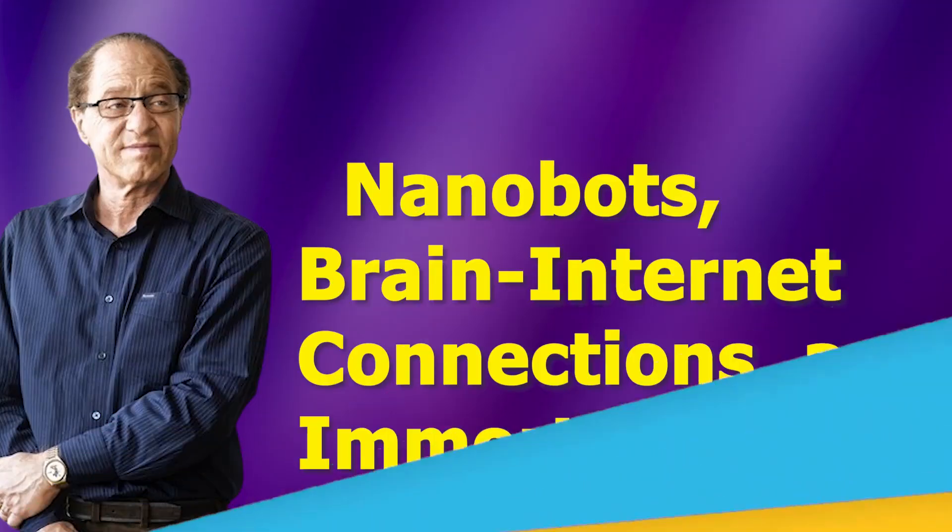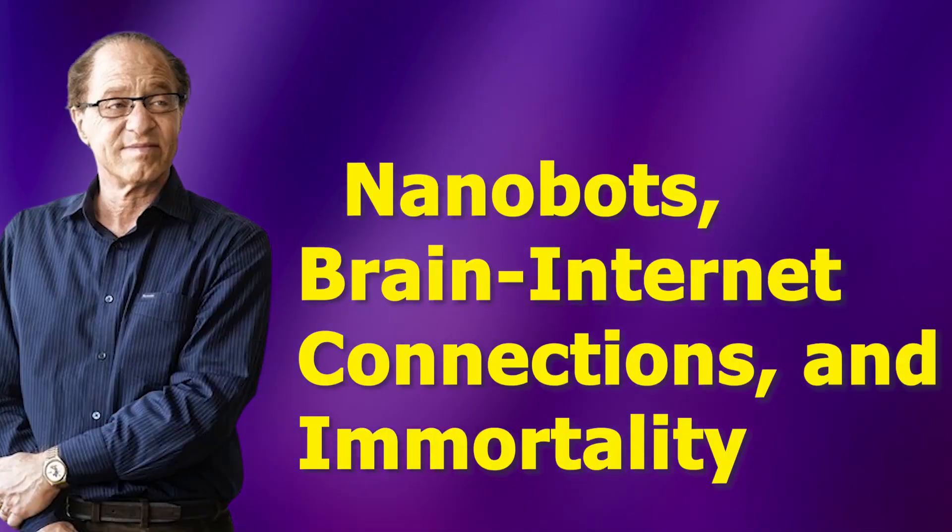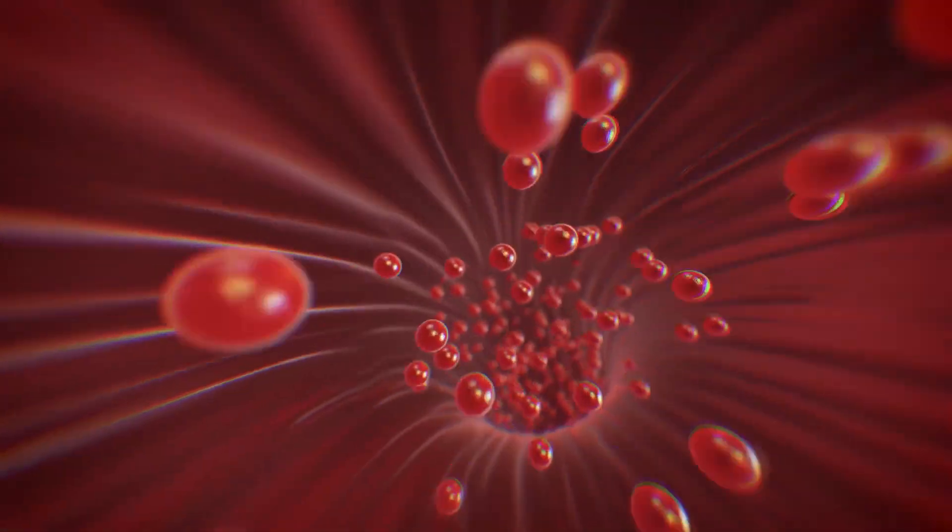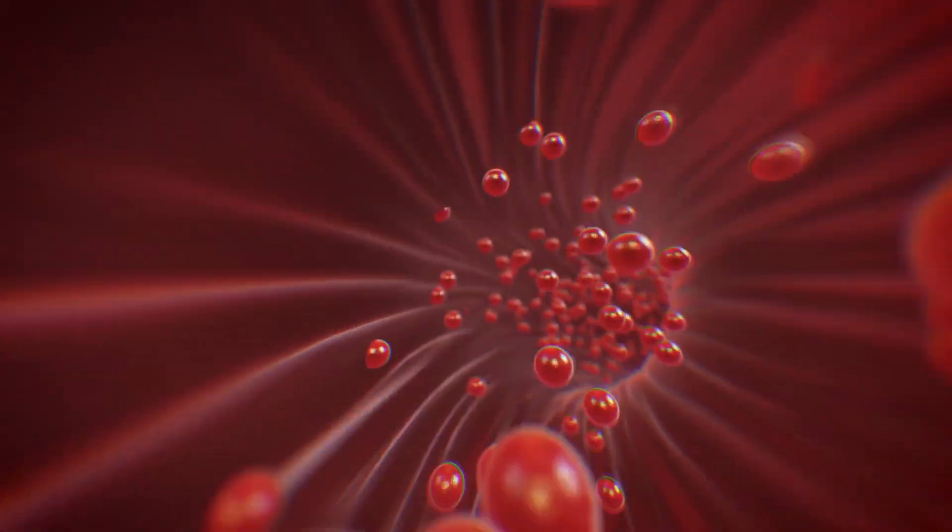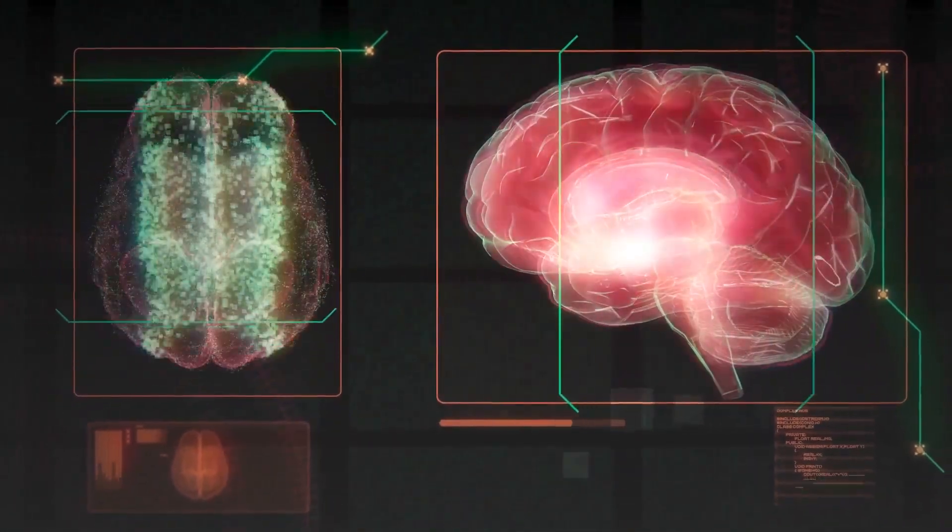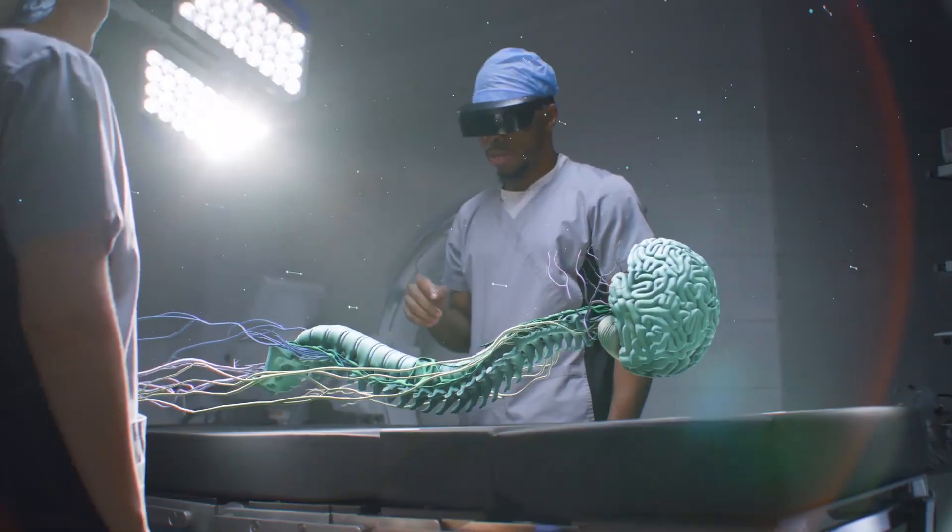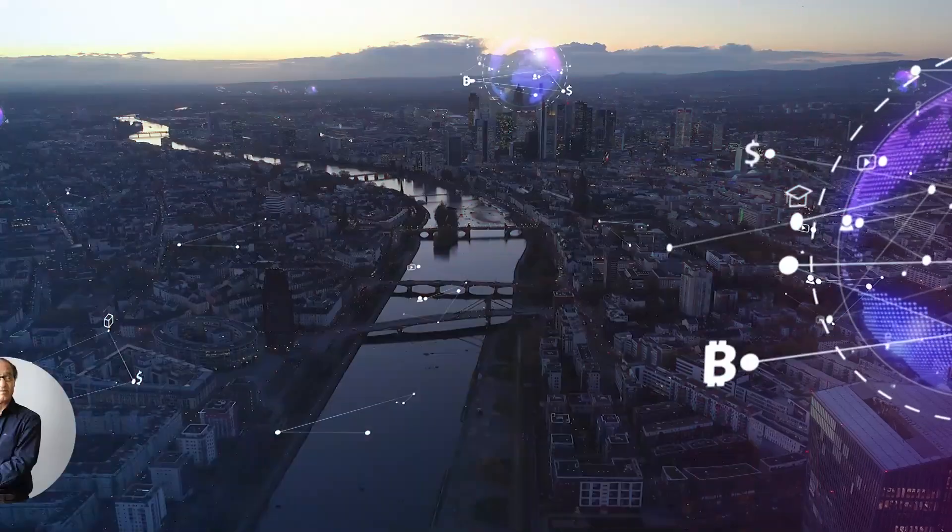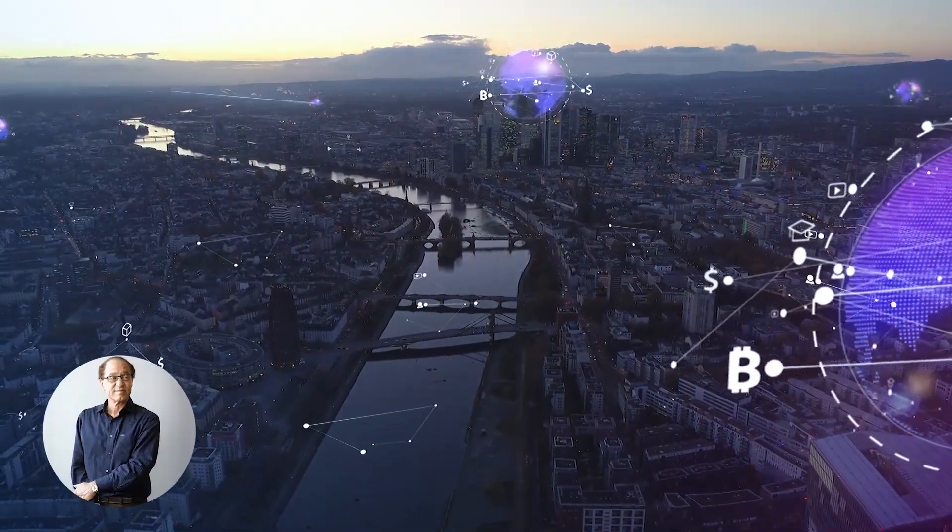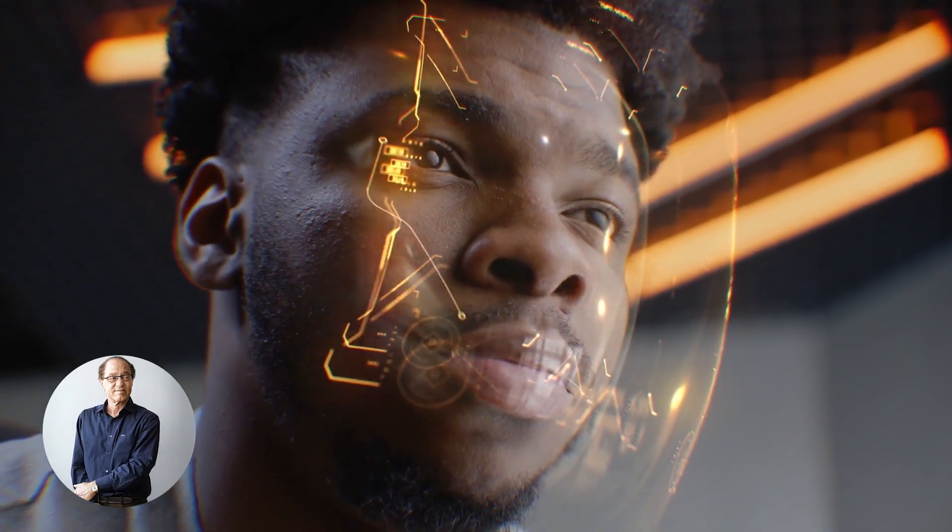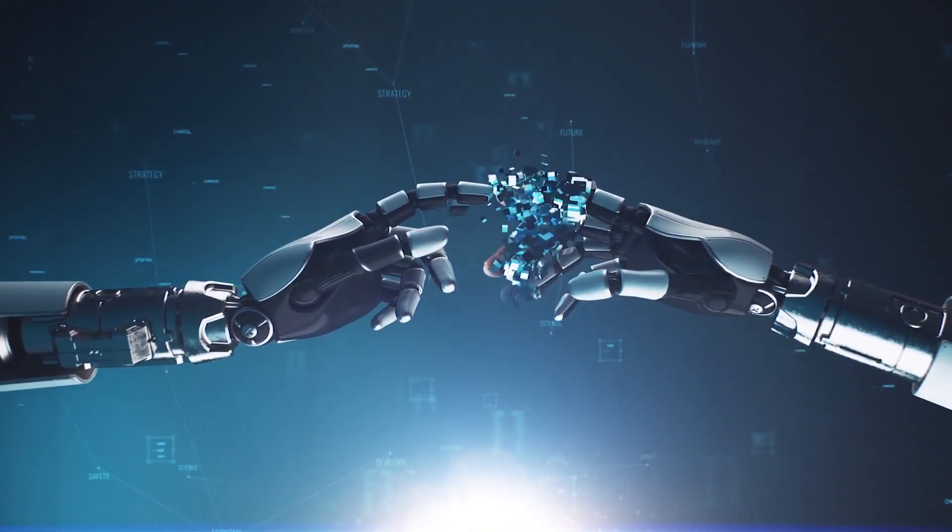Kurzweil's vision includes nanobots in our bloodstream that would continuously repair our bodies, ensuring they remain in optimal condition. Additionally, he envisions a direct mental connection between our brains and the internet, facilitated by these nanobots. This would allow us to send messages and data directly over the web using only our thoughts. Furthermore, Kurzweil suggests that our memories could be uploaded to the cloud, enabling us to access them at any time.